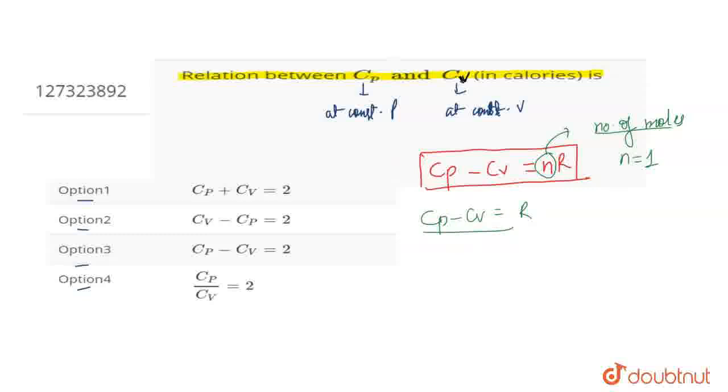Since we want the answer in calories, we know R is the universal gas constant equal to 2 calories. Therefore, CP minus CV equals 2, which matches option 3. Thank you.